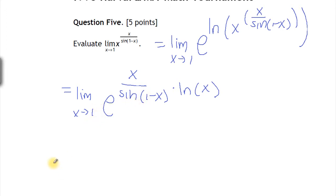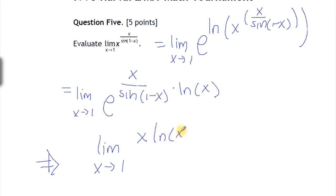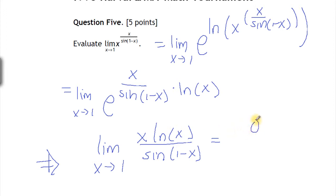Now this limit can be input into the exponent, so we just have to calculate the limit when x goes to one of x times log of x over sine of one minus x. But again, if we input one, log of one is zero so we get zero on top, and sine of zero is zero on the bottom — this is also an indeterminate form.